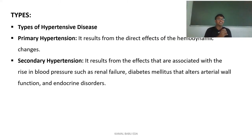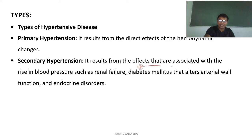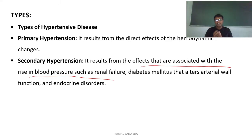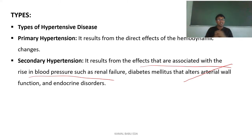Coming to the types of hypertension, we have two main types: primary hypertension and secondary hypertension. Primary hypertension directly affects hemodynamic changes, whereas secondary hypertension results because of an underlying disease — such as renal failure, diabetes mellitus, or endocrine disorders — which alter arterial valve function or cause hormonal changes leading to secondary hypertension. Primary hypertension is directly related to cardiac or heart disease.